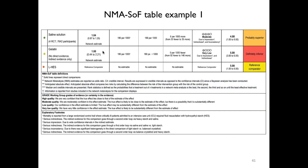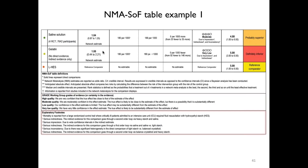Lastly, the lower section has three cells in which the user can find: definitions about NMA terminology and abbreviations used in the NMA SoF tables, a description of each of the final GRADE certainty of evidence judgments, and explanatory footnotes that describe in detail the rationale of the certainty of evidence assessments.